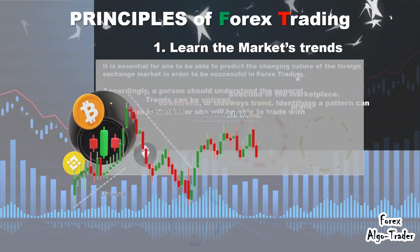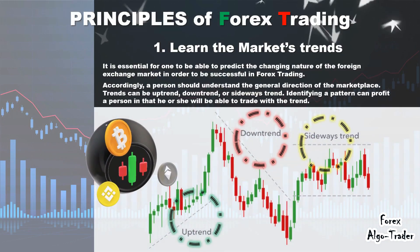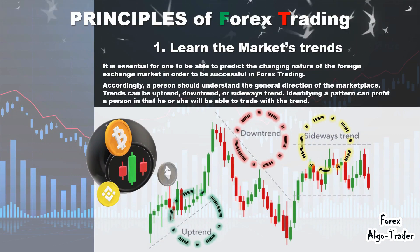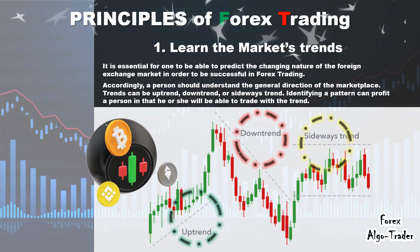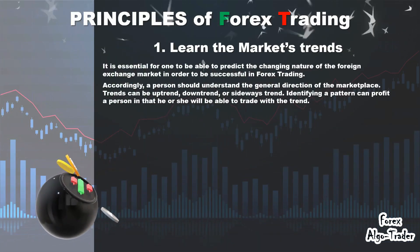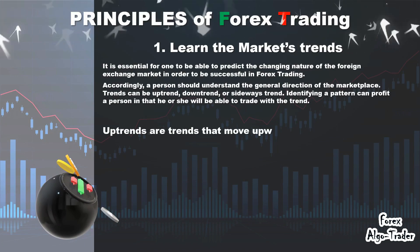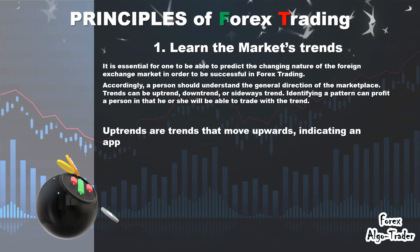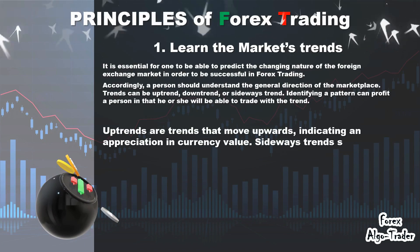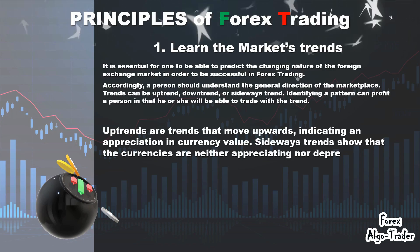Here is a description of the above stated types of market trends: the Forex market chart uptrend, candlesticks chart downtrend, and finally the sideways trend. Uptrends are trends that move upwards, indicating an appreciation in currency value. Downtrends move downwards as an indication of depreciation in currency value. Sideways trends show that the currencies are neither appreciating nor depreciating.